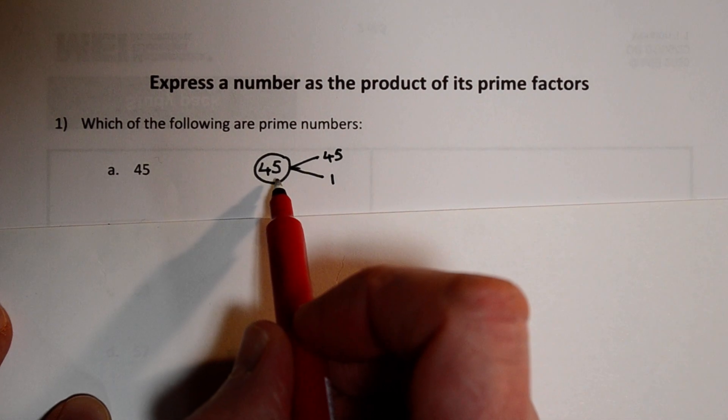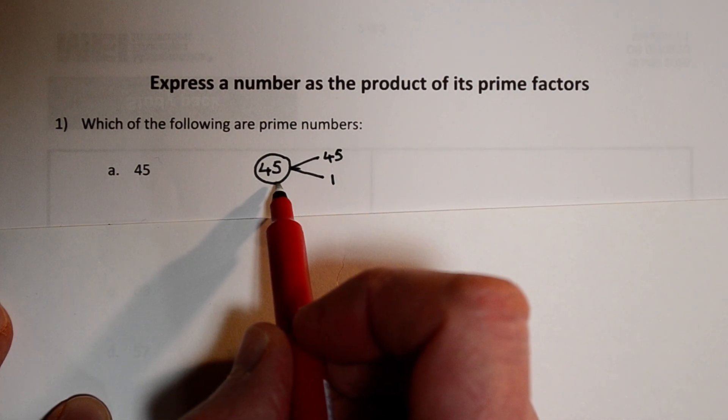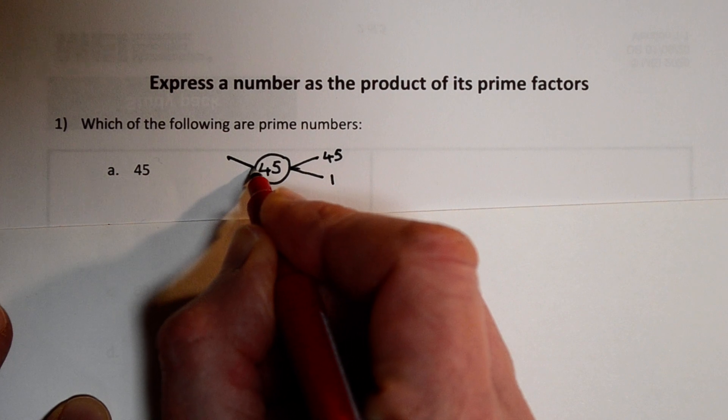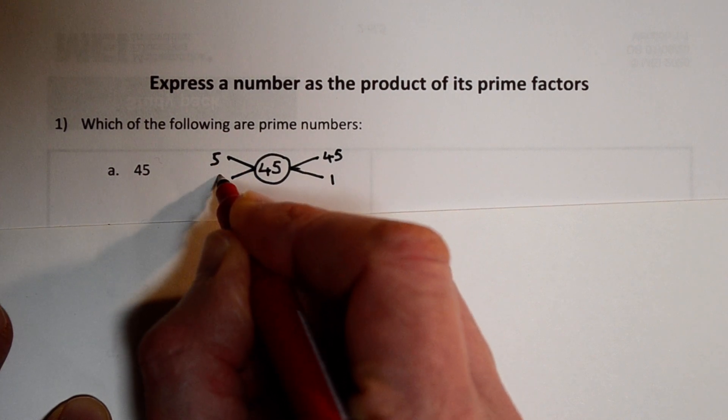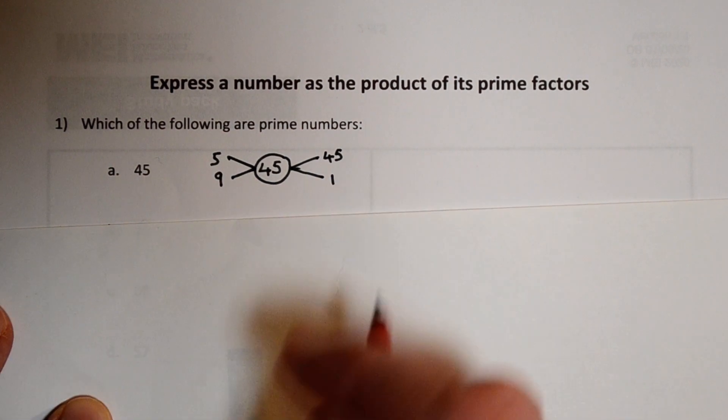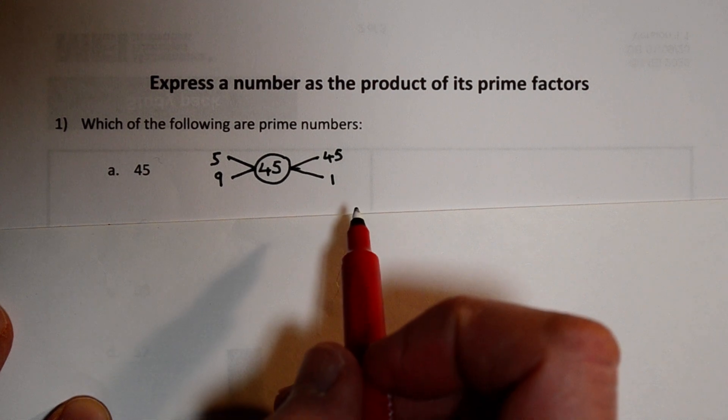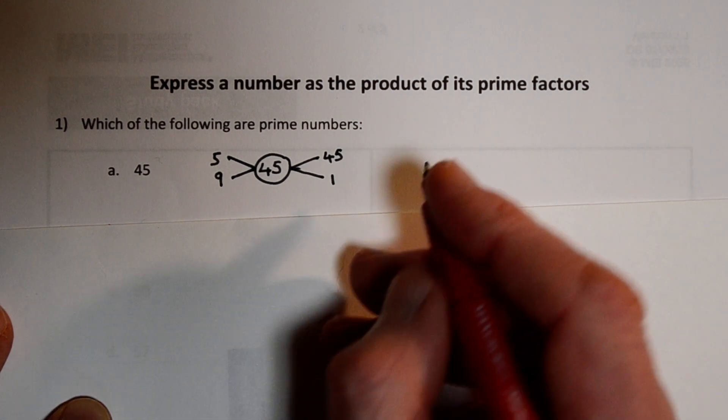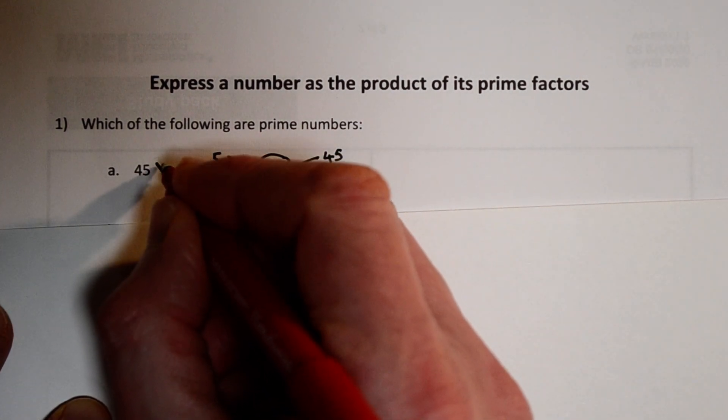I see it definitely has 5 as a factor because it ends in 5 and 45 is in fact 5 times 9. So we can stop there. We've already got more than two factors so it's not a prime number.